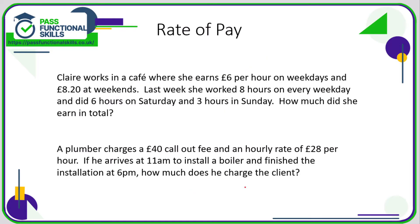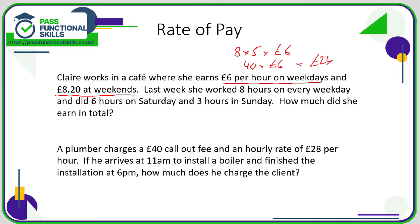Let's look at some problems involving rate of pay. Claire works in a café. She earns £6 per hour on weekdays and £8.20 at weekends. Last week she did 8 hours on every weekday. There are 5 weekdays — Monday, Tuesday, Wednesday, Thursday, Friday — so she did 8 times 5 times £6. 8 fives are 40, so that's 40 multiplied by 6. 6 times 4 is 24; put in the 0, so during the week she earned £240.